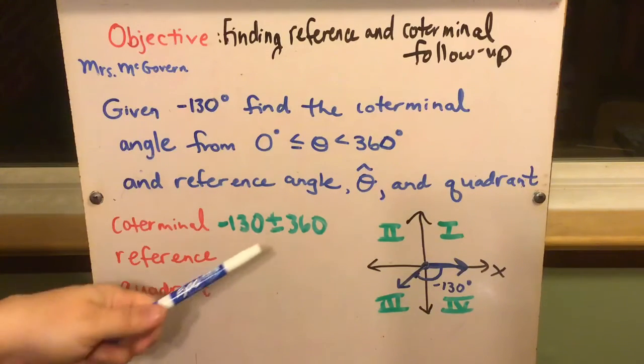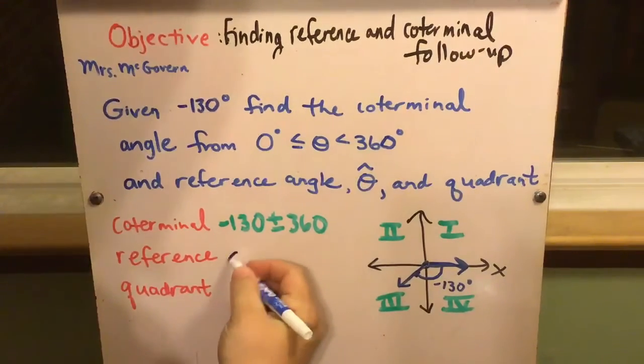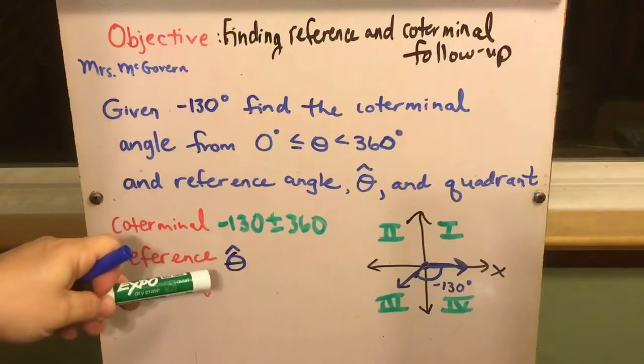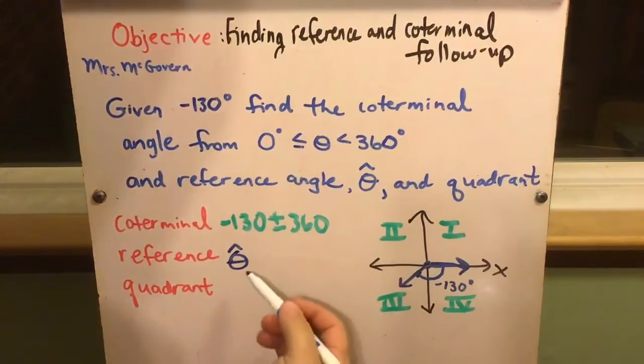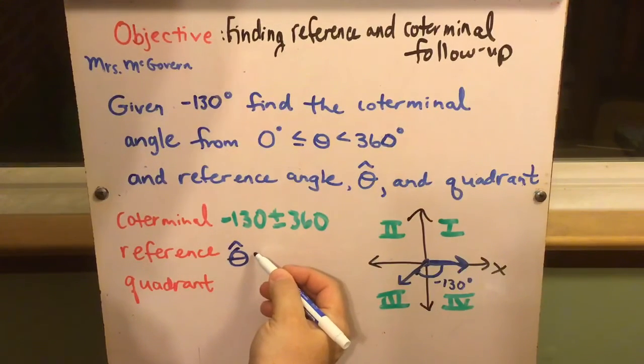The reference angle, which is a variable theta with a carrot over it, that's the symbol I like to use for reference angle. Some math books will use different versions, but this is the symbol I use. A reference angle is how far you are from the x-axis.